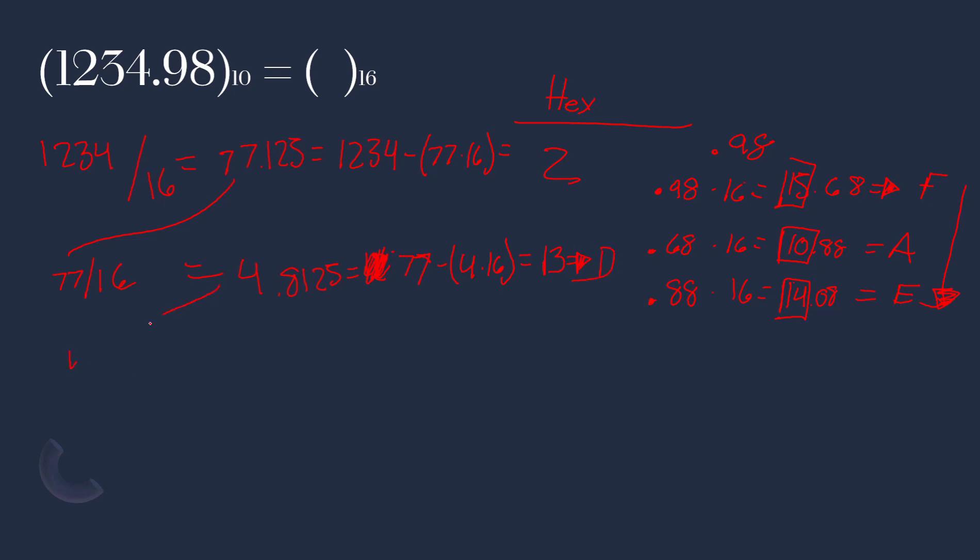We are left with 4. We divide that by 16. 16 goes into 4, 0 times and we are left with 4. We read up for integer parts, we read down for fraction parts. So 4D2. So 1234.98 in base 10 equals 4D2 and for this part we read down so FAE in base 16.